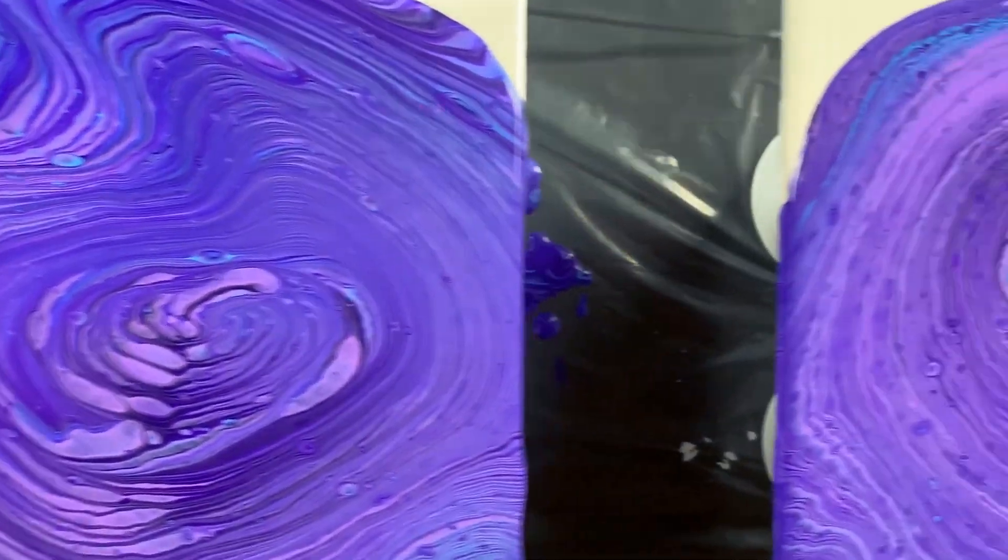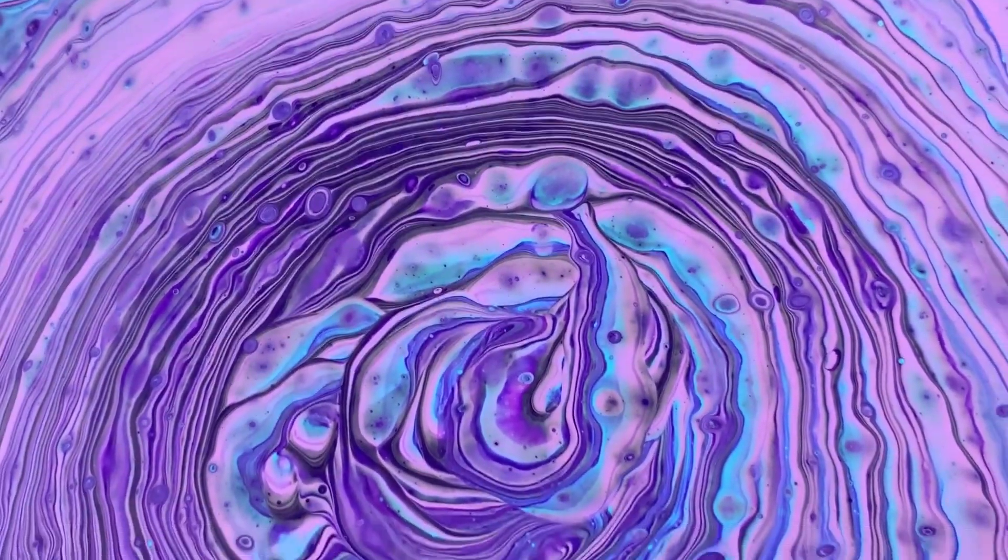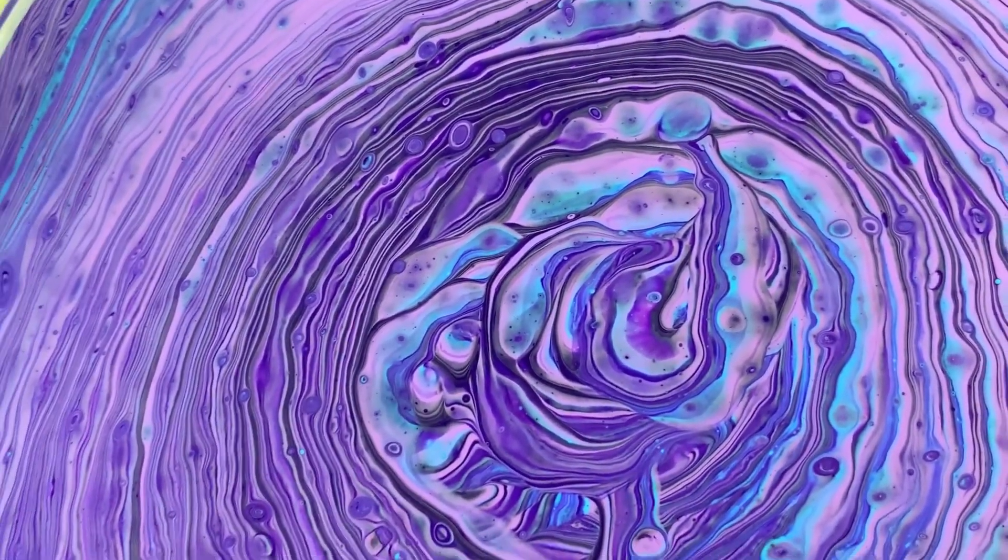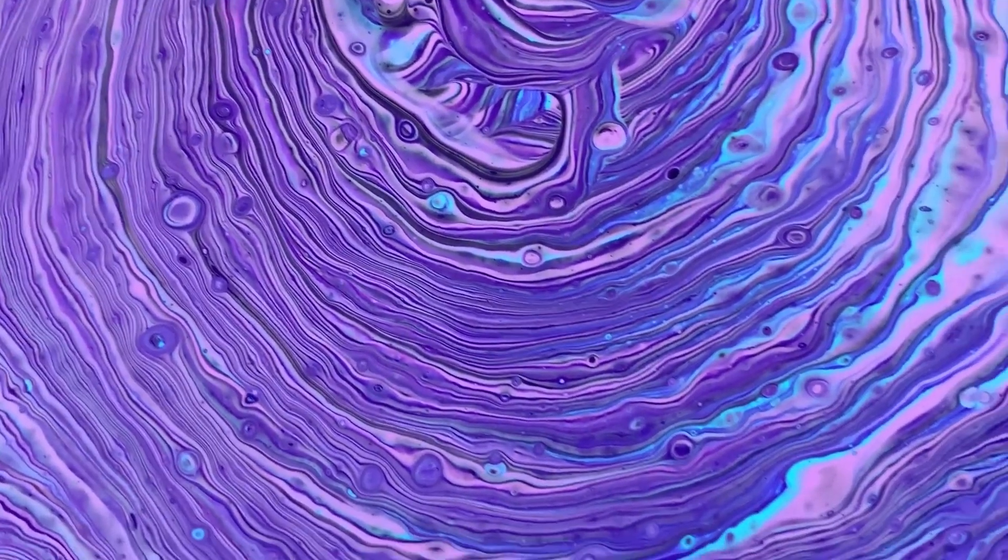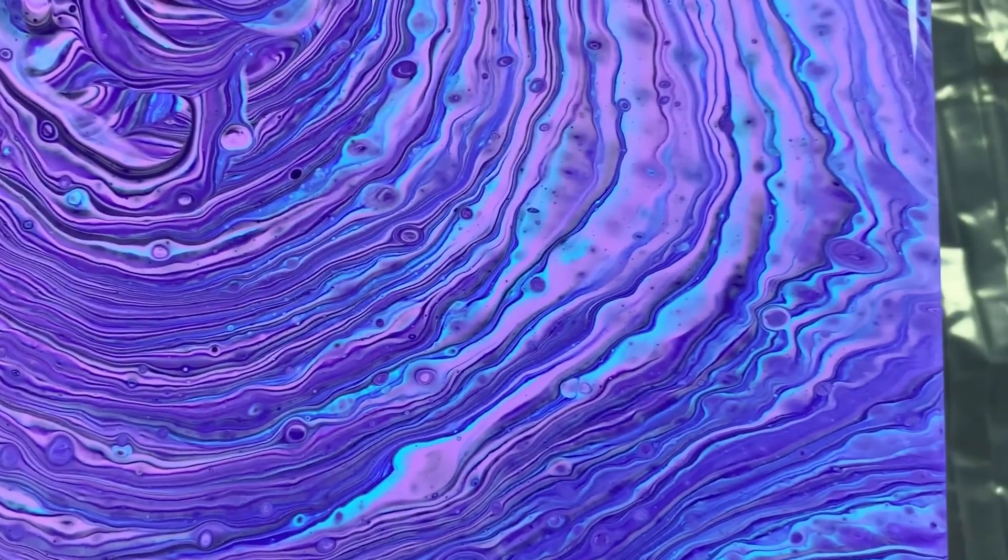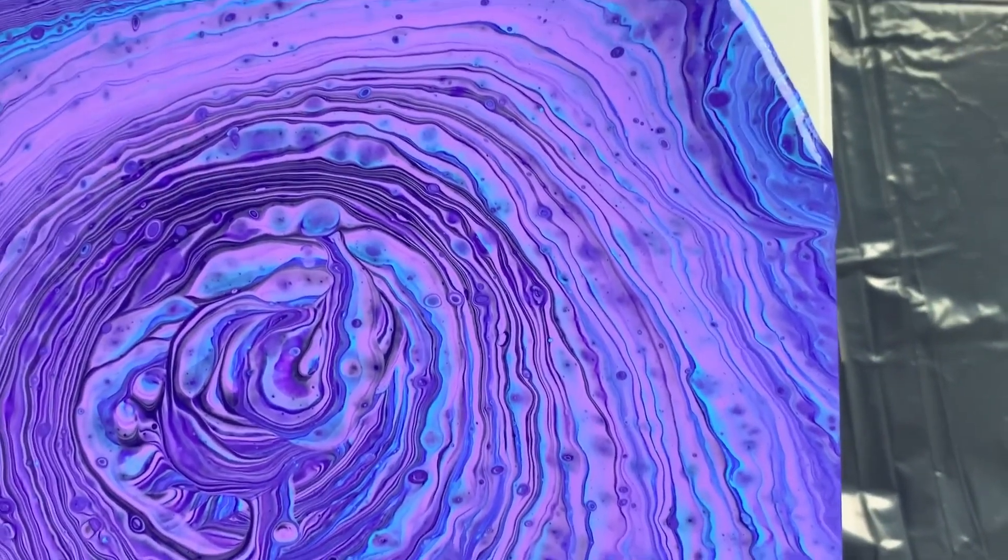And then this last one was the Floetrol with silicone in it. And as you can see, there's quite a lot more cells that popped up in between each layer of the paint. But all three of them came out gorgeous. I kind of love them all.